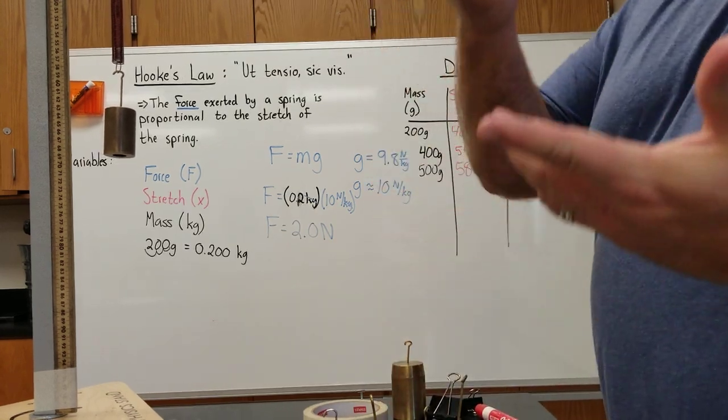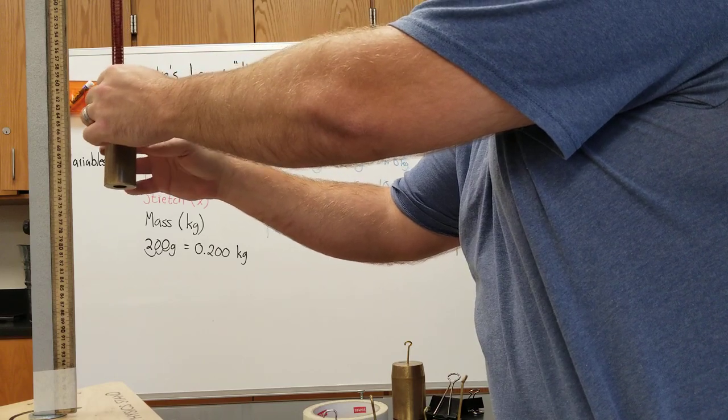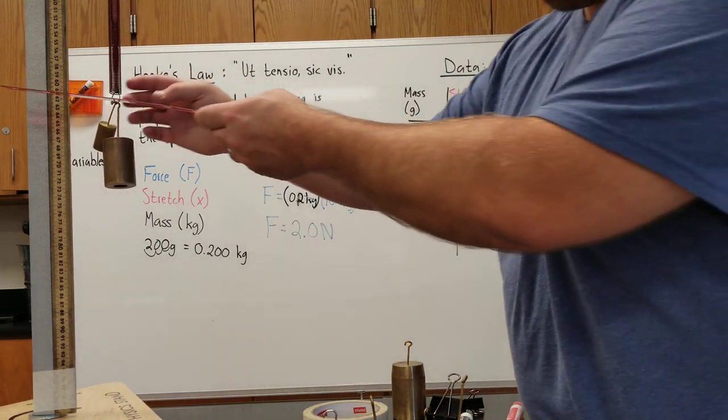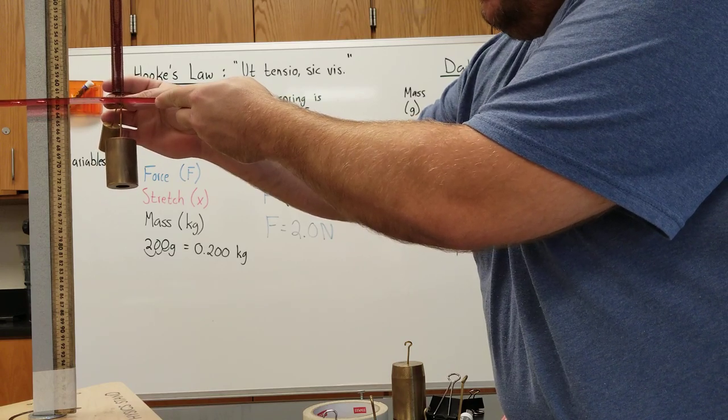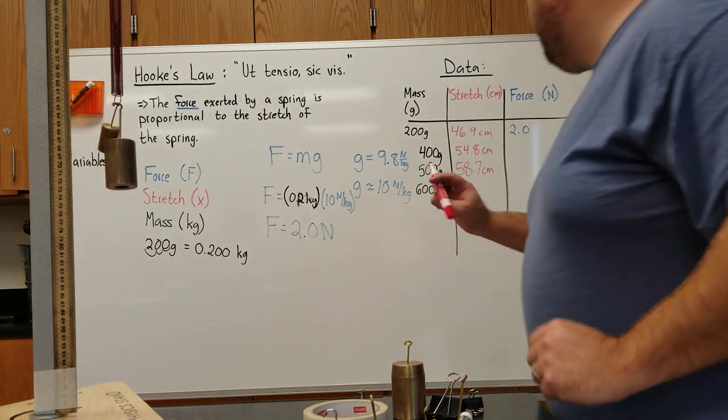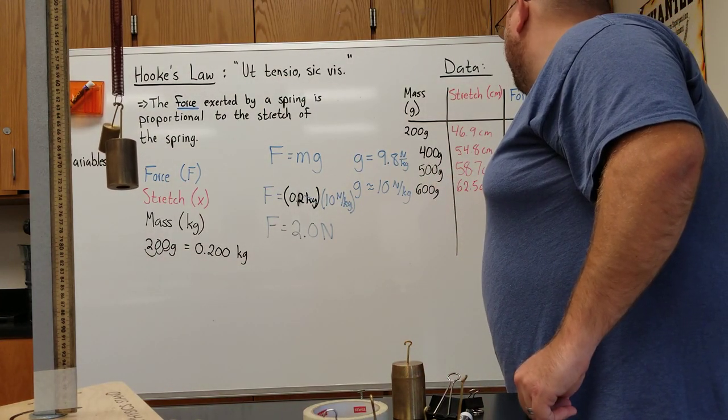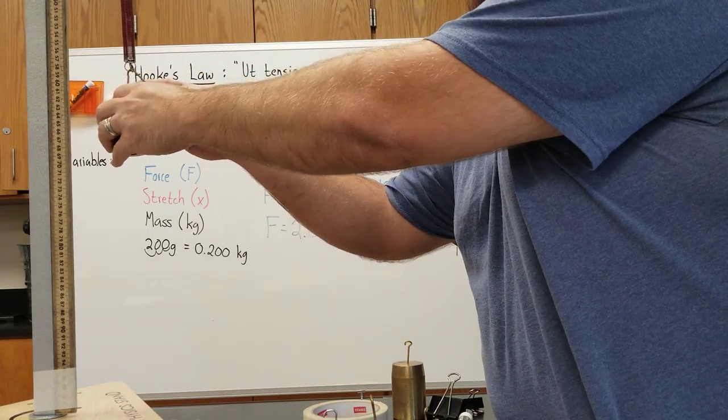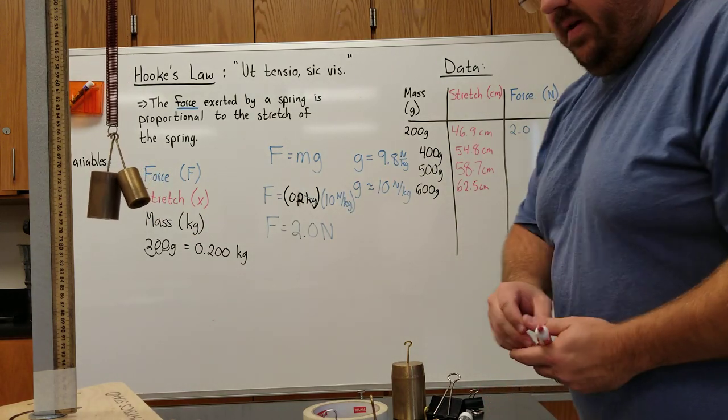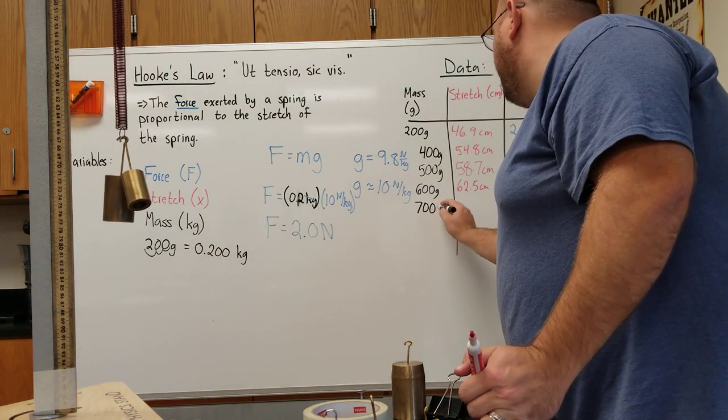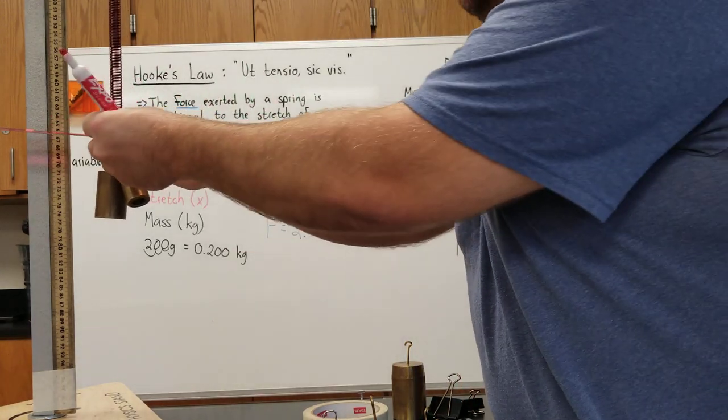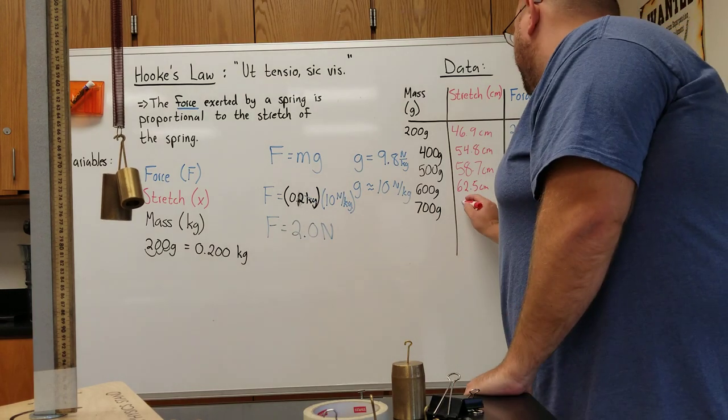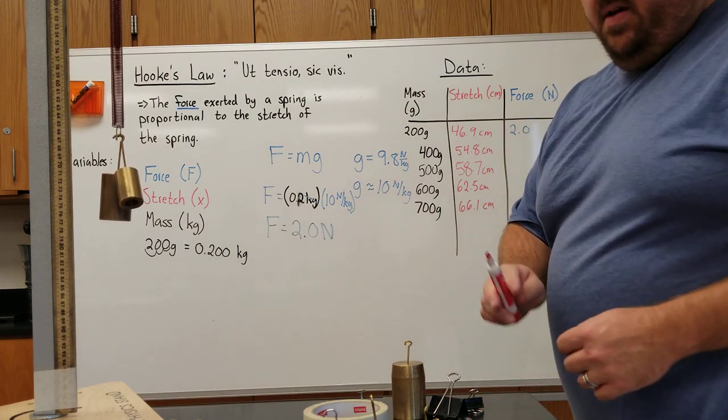If I add a 100 gram, now this would be 600 grams. So 600 grams gives me a stretch of 62.5. I can replace the 100 with a 200 gram mass, so 500 plus 200 would be 700. So when I do 700, that gives me a stretch of 66.1 centimeters.